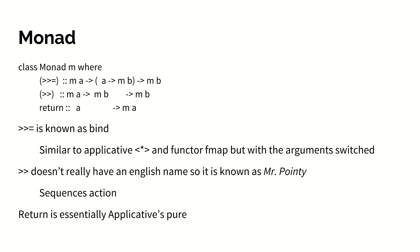Applicative is actually a super class of monad. Monad defines more guaranteed operations. Monad defines an operation whose operator is greater than greater than equal to sign and this operator is known as bind. The other operator defined here with two greater than signs doesn't really have a name and is oftentimes simply referred to as mr. pointy when it needs a name. Another operation monad defines is return. Return is not of special note because it is essentially exactly the same as applicative's pure.